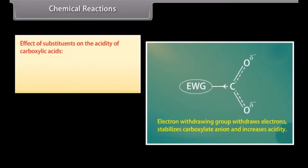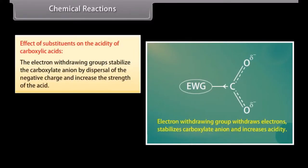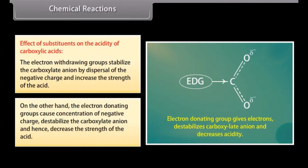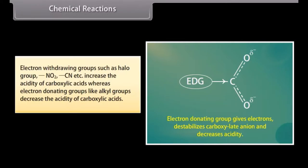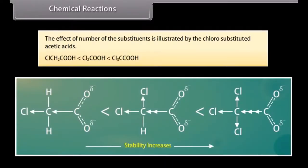Effect of substituents on the acidity of carboxylic acids: Electron withdrawing groups stabilize the carboxylate ion by dispersal of the negative charge and increase the strength of the acid. On the other hand, electron donating groups cause concentration of negative charge, destabilize the carboxylate anion and hence decrease the strength of the acid. Electron withdrawing groups such as halo, NO2, CN etc. increase the acidity of carboxylic acids, whereas electron donating groups like alkyl groups decrease the acidity. The acid strength increases from chloroacetic acid to trichloroacetic acid.